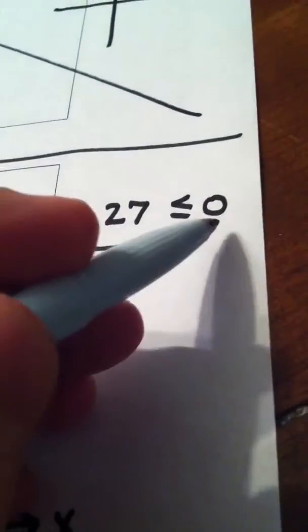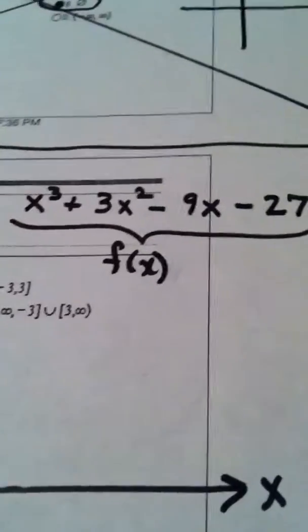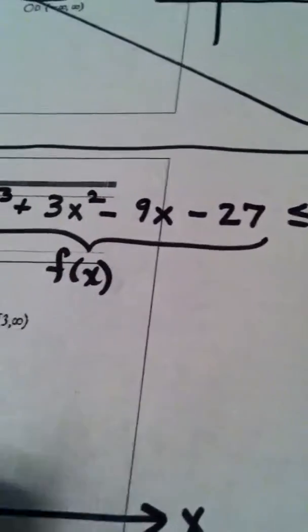And of course, the reason I need this to be 0 is so that I can tell what quadrant I'm looking for for y, whether it's quadrant 1 or 2 or whether it's quadrants 3 or 4.